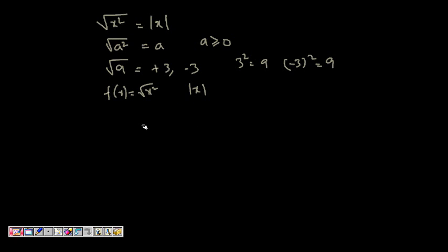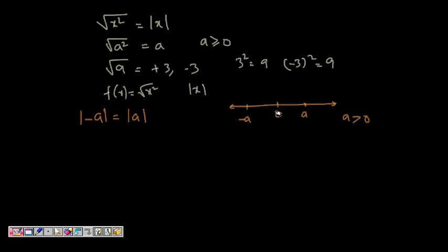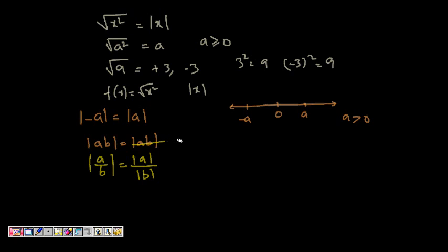Let's see some properties of absolute value. First, |-a| = |a|, because a and -a are equidistant from 0 on the number line. Next, |a × b| = |a| × |b|. Similarly, |a/b| = |a| / |b|.